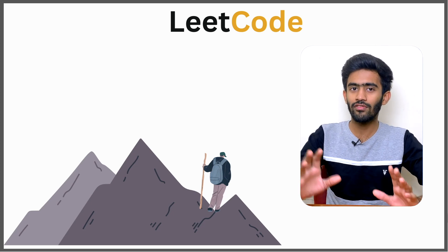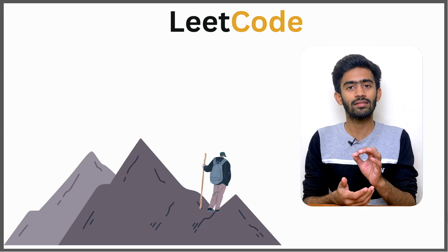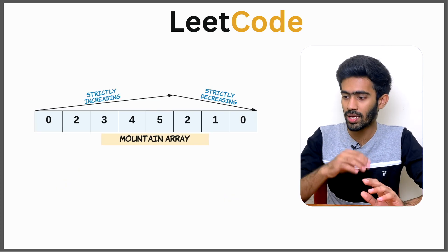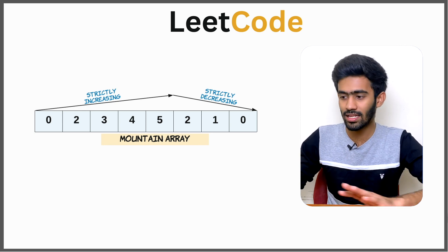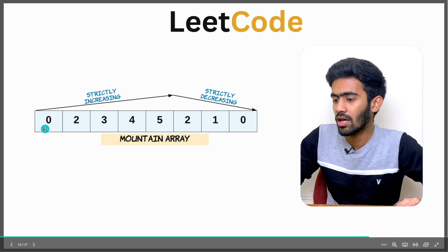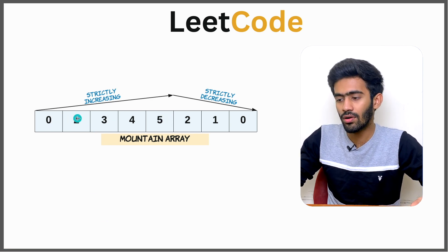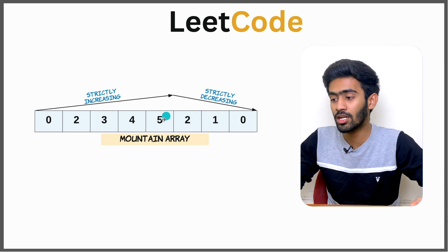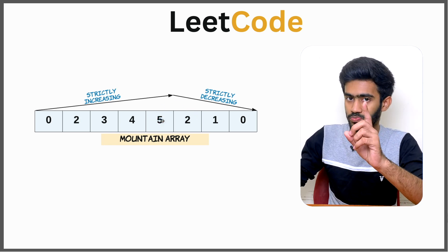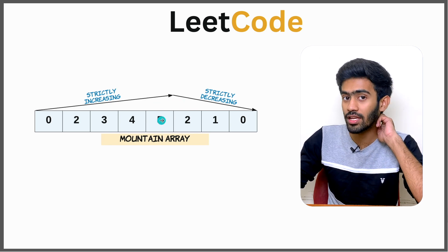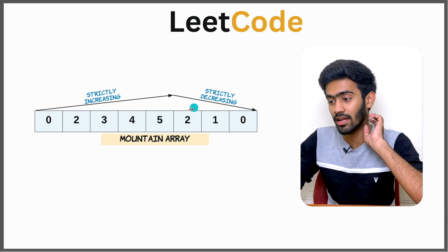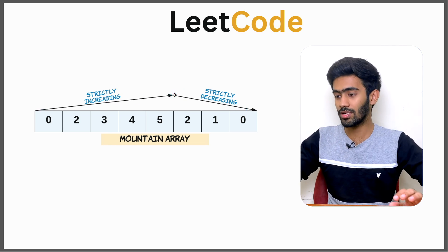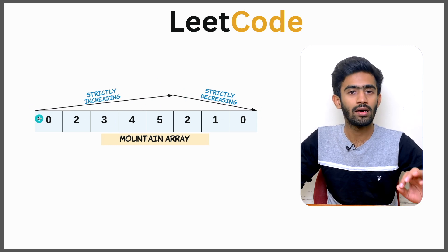With that, let's look at an example. This is the image given in LeetCode. Consider the array [0, 2, 3, 4, 5, 2, 1, 0]. Here, 0 < 2 < 3 < 4 < 5, and when you reach 5, it is not less than 2. So 5 is the peak point — this is i. From this peak, it should strictly decrease: 5 > 2 > 1 > 0. So it is strictly decreasing on the right and strictly increasing on the left. This forms a triangle, and hence this is a mountain array.